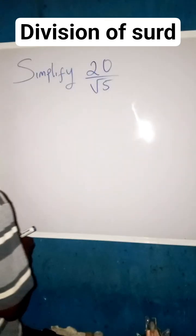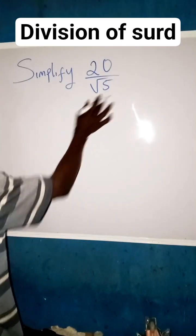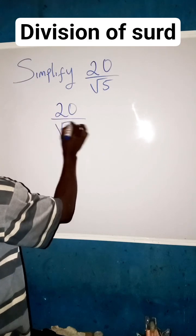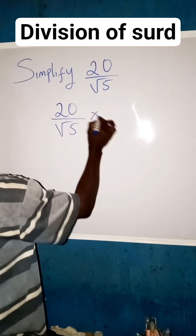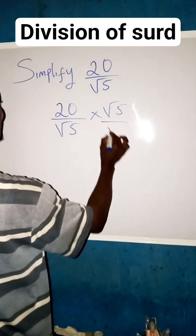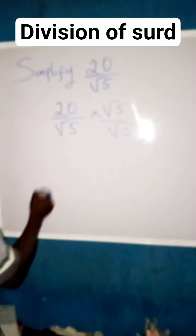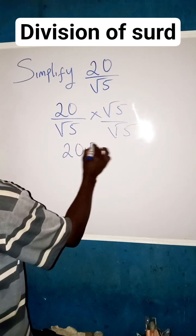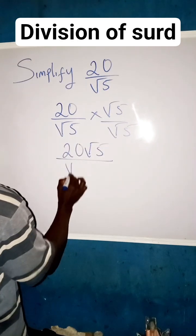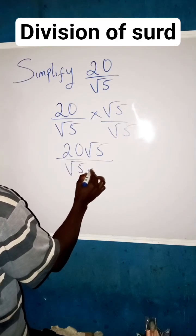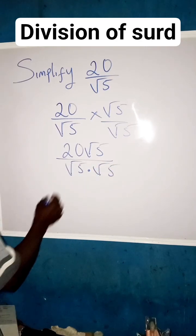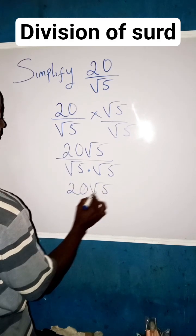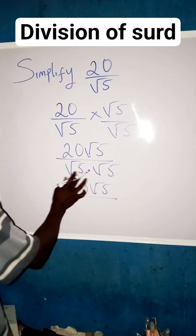The denominator is root 5, so we now have 20 divided by root 5, multiplied by root 5 over root 5. That gives us 20 times root 5 — which equals 20 root 5 — all over root 5 times root 5.